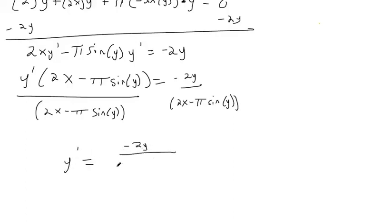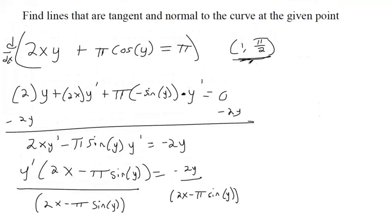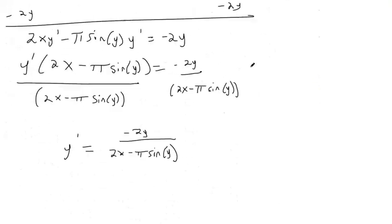Okay, so we're ready for the next step. Now we have an equation to help us find those tangent slopes. We need to find the tangent slope by plugging in 1 for x and pi over 2 for y.